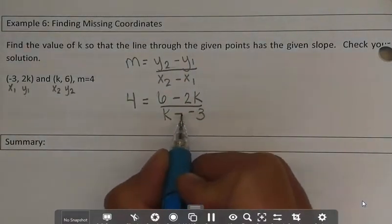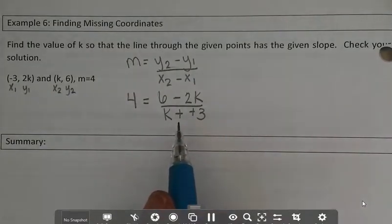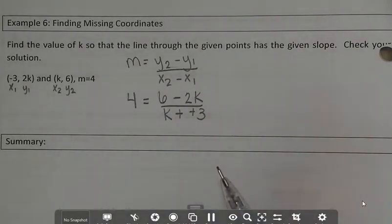Minus a negative gives me positive. Now what I need to do is I need to solve for k. And the best way to do that, well there's two ways. But you've got to get k out of the denominator. You can't solve for it while it's in the denominator.